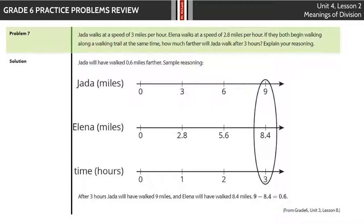And then our last question. Jada walks at a speed of 3 miles per hour. Elena walks at a speed of 2 and 8 tenths miles per hour. If they both begin walking along a walking trail at the same time, how much farther will Jada walk after 3 hours? And our double number line illustrates this perfectly for us. Our number of hours, 0, 1, 2, 3. They started at the same spot. After 1 hour, Jada went 3 miles, 6, and 9.